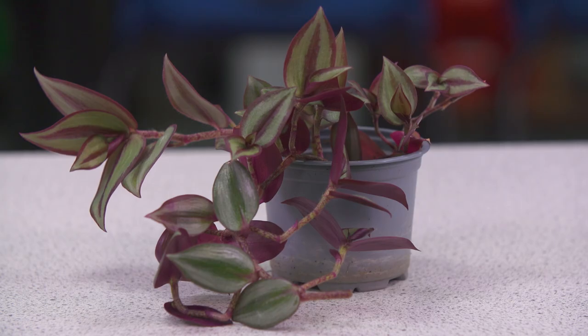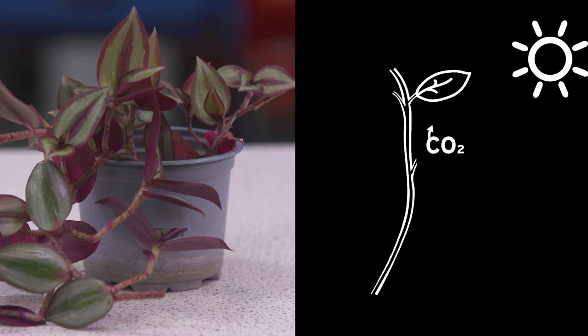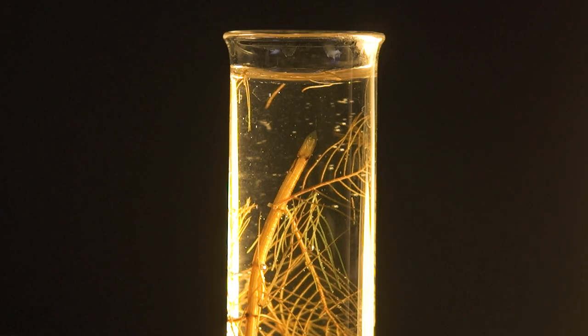So why does pondweed bubble? This is a classic photosynthesis practical, but it is somewhat counterintuitive. Often students learn about photosynthesis in a terrestrial plant where gas exchange happens via stomata into the air. And here we are looking at it in an upturned aquatic plant, which is releasing bubbles of gas from its stem.